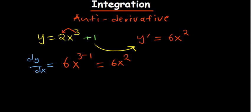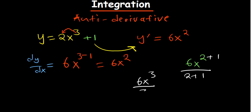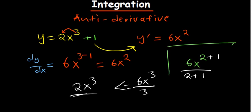Now if you're trying to think of the opposite — integration — the first thing you do is add 1 to the power, because we know we subtracted in differentiation. Then divide by the result: 6x³ over 3, which gives us 2x³. You've reversed it — this is basic integration.